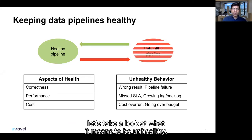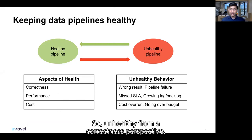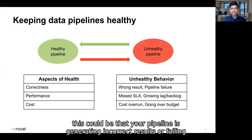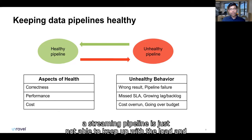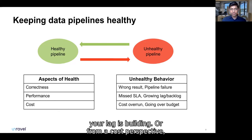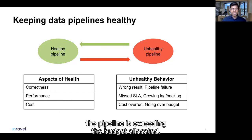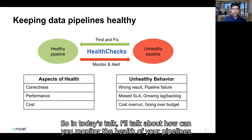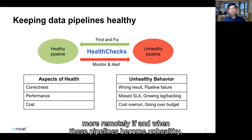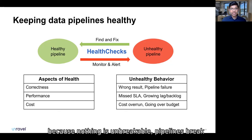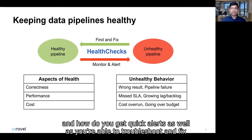To understand this better, let's take a look at what it means to be unhealthy. From a correctness perspective, this could be that your pipeline is generating incorrect results or failing outright. From a performance perspective, maybe your pipeline is missing its SLAs, or the streaming pipeline is just not able to keep up with the load and your lag is building. Or from a cost perspective, the pipeline is exceeding the budget that was allocated. So in today's talk, I'll talk about how you can monitor the health of your pipelines and have confidence that they are running in a healthy way — and even more importantly, if and when these pipelines become unhealthy, because nothing is unbreakable. Pipelines break. And how do you get quick alerts as well as be able to troubleshoot and fix these problems quickly?